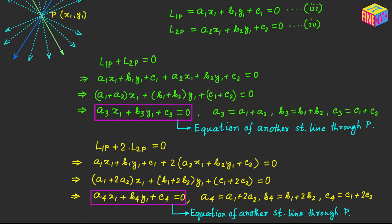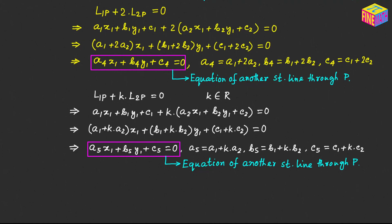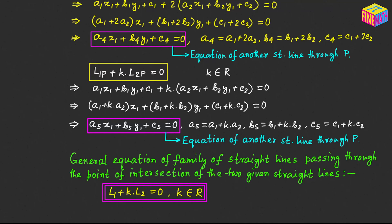As we keep adding the two equations with different multiples, we continue to get new straight lines that also pass through point P. Ultimately, we can add the first equation with some real number k times the second equation. The resulting equation gives us the generic equation of all straight lines passing through P. So the general equation is: equation of the first straight line plus k times the equation of the second straight line. This is the general equation of the family of straight lines passing through point P. Thank you for watching.